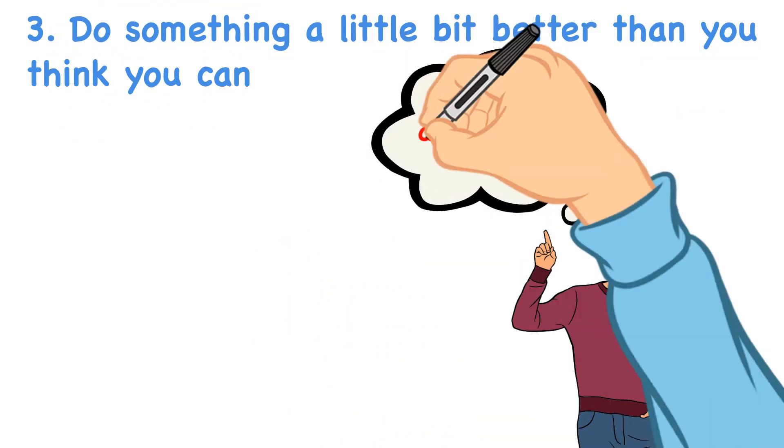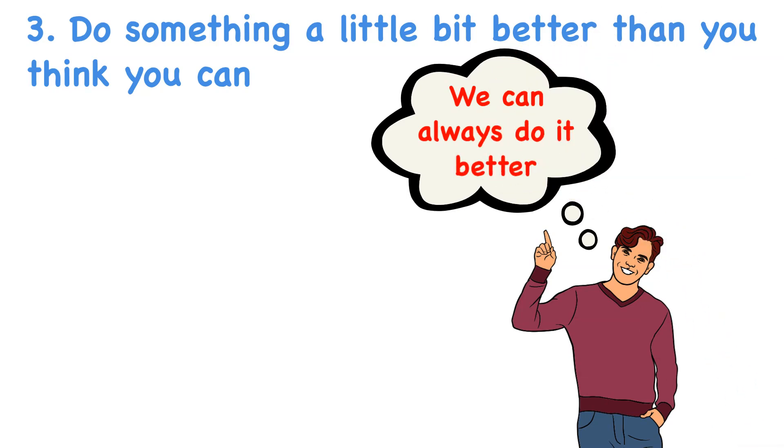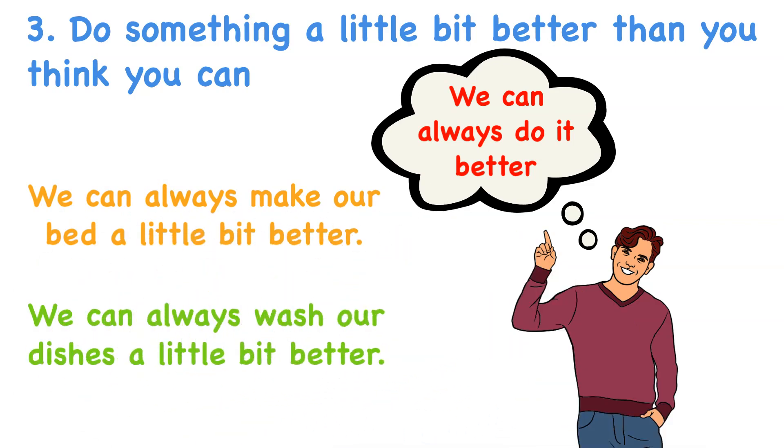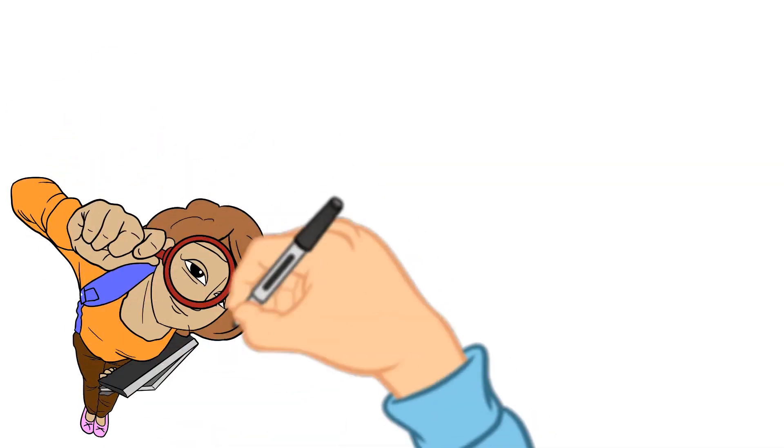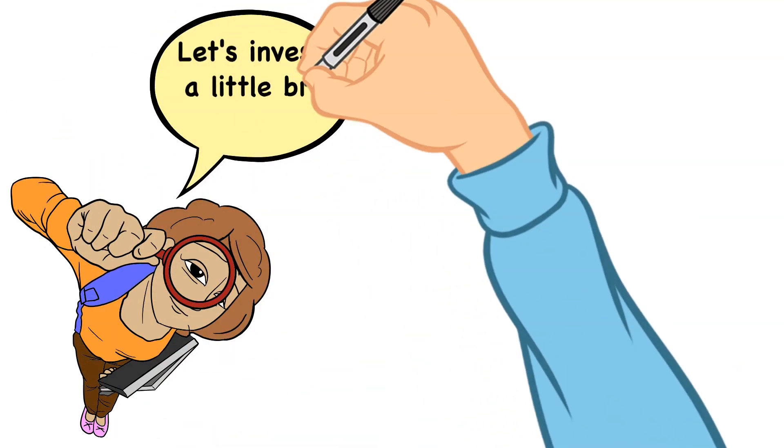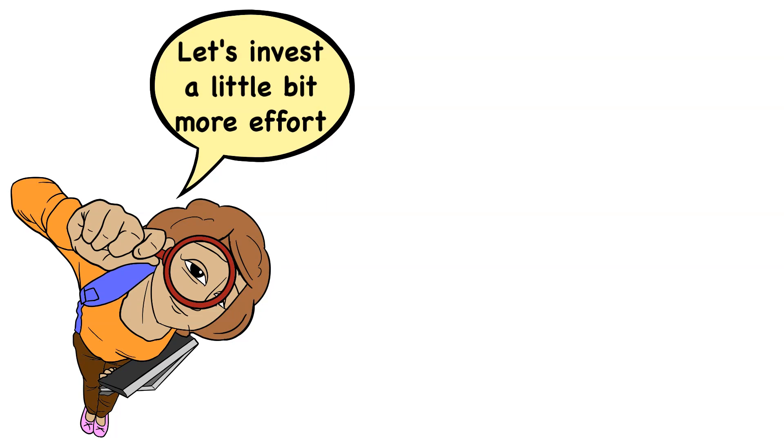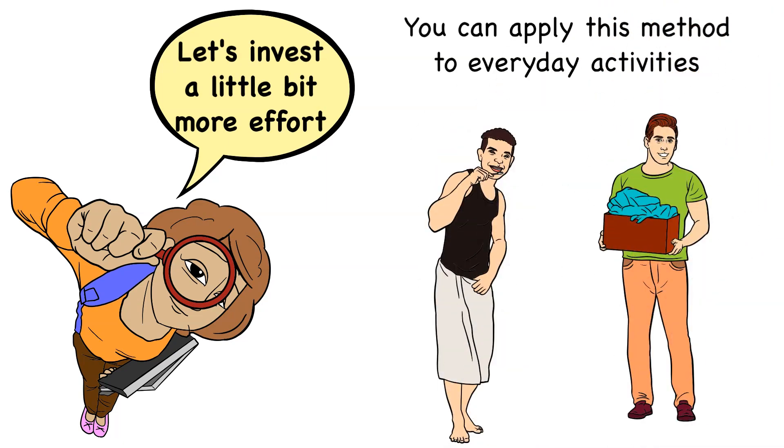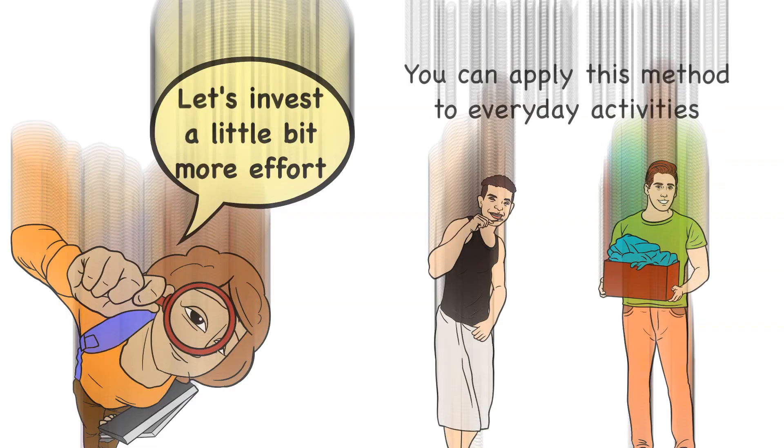No matter what we are doing in life, we can always do it a little bit better. We can always make our bed a little bit better. We can always wash our dishes a little bit better. Doing things in a better way usually takes paying attention to the details and investing a little bit more effort to do it. The beautiful thing about this way of increasing your willpower is that you can apply it in everyday activities like brushing your teeth, cleaning your bedroom, and of course, making your bed and washing the dishes.